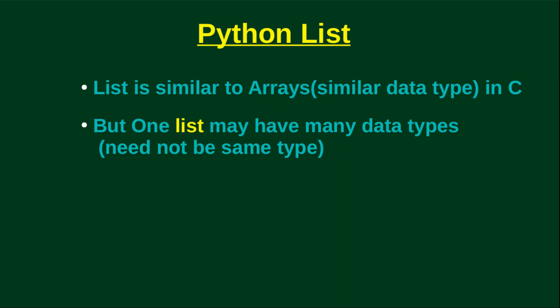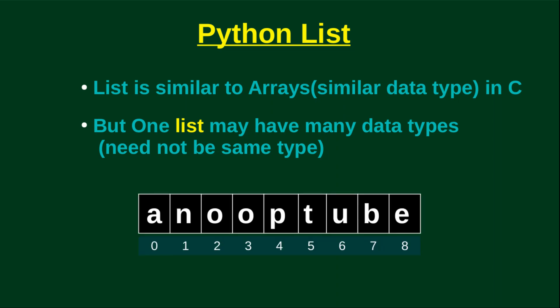We can add the same data types in Python that we have in C++. We can add strings, integers, and other types. In this example, we have a Python list with mixed types.